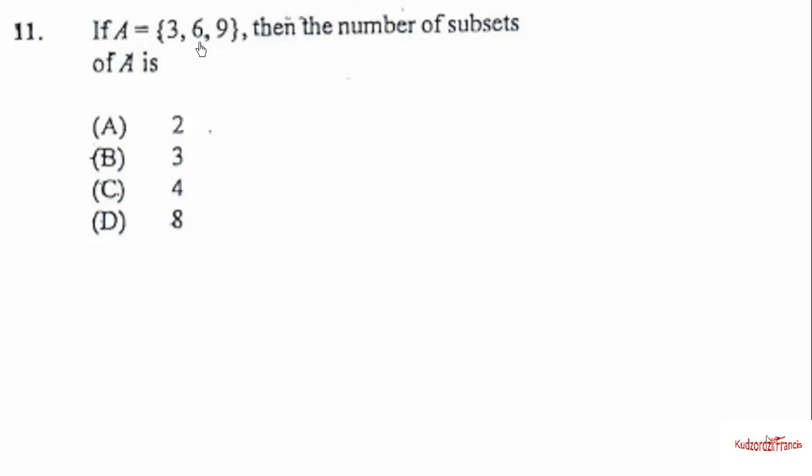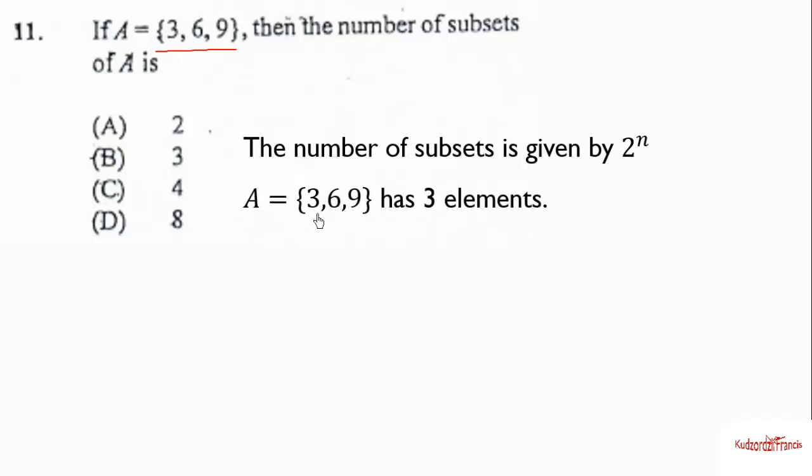If A is equal to the set containing 3, 6, and 9 as elements, the number of subsets of A is - we know the number of subsets of a set is given by 2 to the power n. The given set has three elements, therefore n equals 3. So if n equals 3, then we substitute into this to get 2 to the power 3, which is 2 times 2 times 2, which is 4 times 2, and that will give you 8.